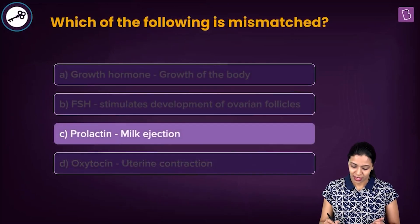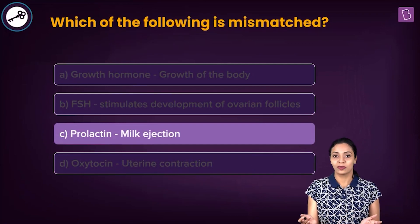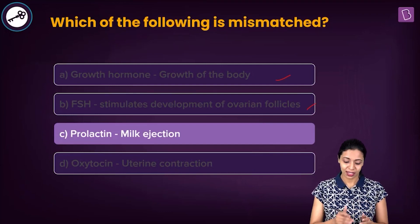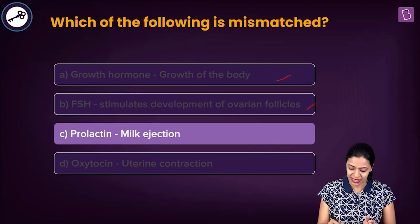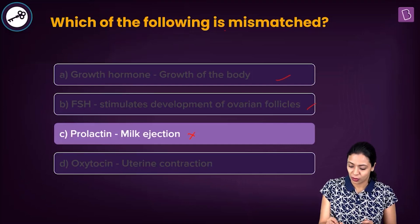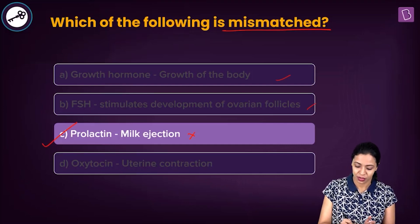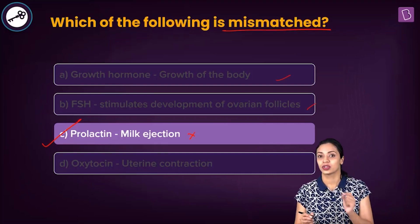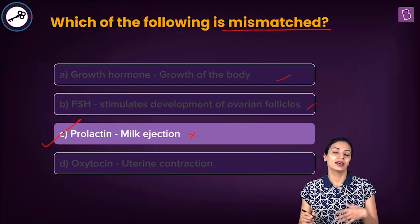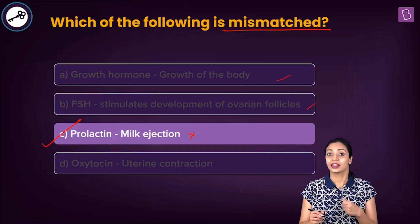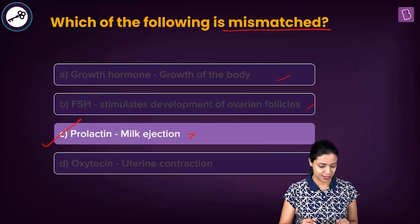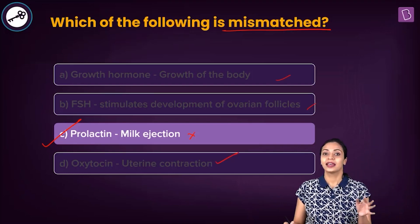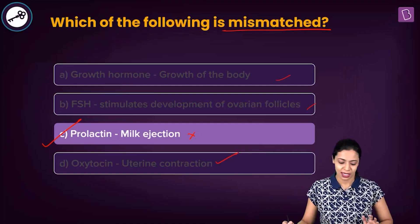Looking at the options: growth hormone for body growth is correct; FSH stimulates development of ovarian follicles is correct; prolactin — milk ejection is incorrect. Prolactin is not involved in milk ejection; that is a function of oxytocin. Prolactin is involved in stimulating breast development and formation of milk during and after pregnancy. Oxytocin is involved in uterine contraction, which is also correct. Therefore, the correct answer is option C: prolactin is mismatched with milk ejection.